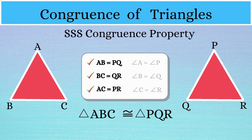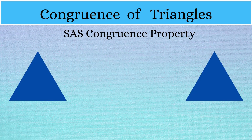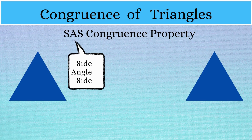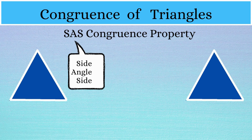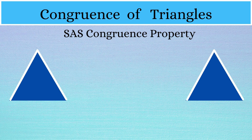We can be sure that triangle ABC and triangle PQR are congruent. The next congruence property is the SAS congruence property. SAS stands for side, angle, and side. According to this property, two triangles are said to be congruent if two sides of one triangle are equal to two sides of the other triangle, and also the included angle between the two sides of both triangles has to be equal. So we have two sides and the angle in between them to be verified for the SAS property.